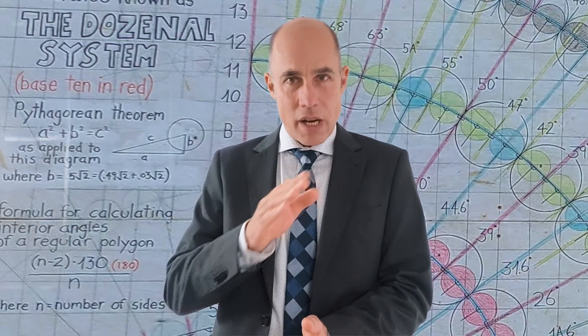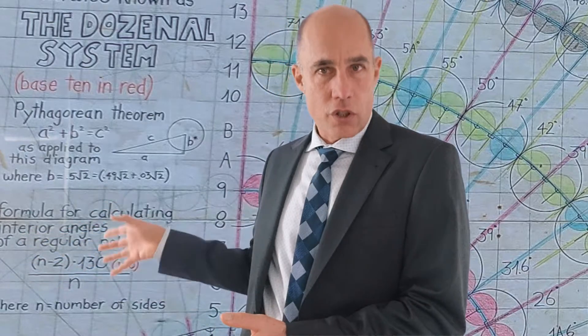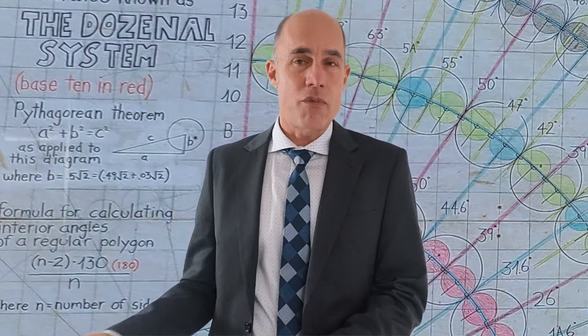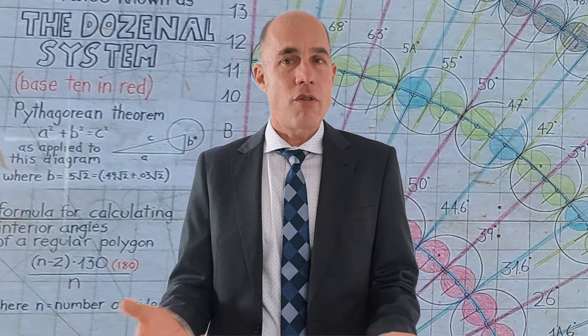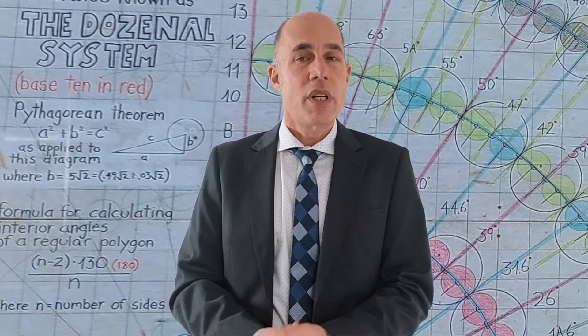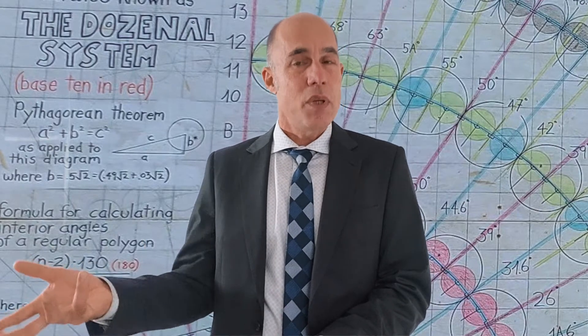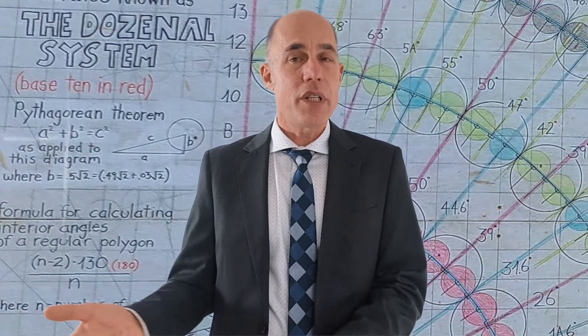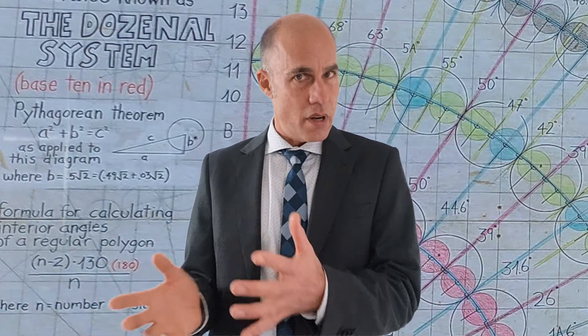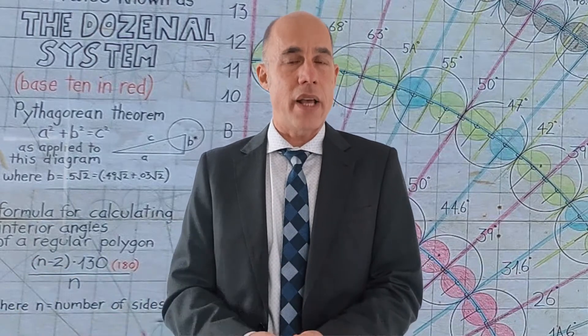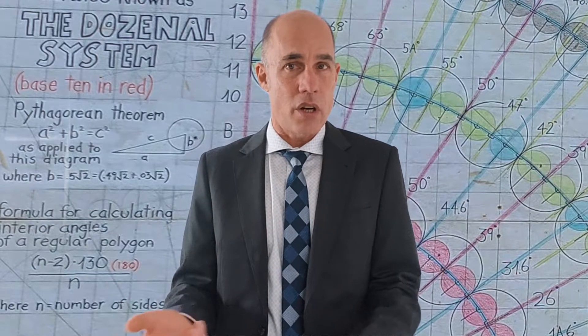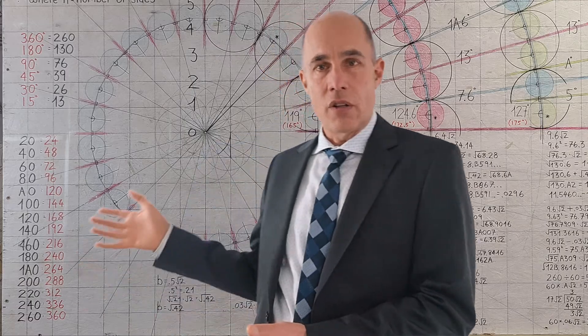So that first ring, if we start drawing lines between all the small circles, we create a polygon. The formula that we're looking for is n minus 2 times, in base 10, it would be 180. In base 12, it's 130, the same number. And then we're dividing that by n, where n is the number of sides of the polygon.